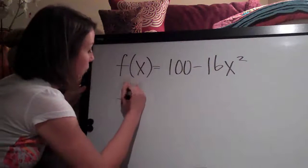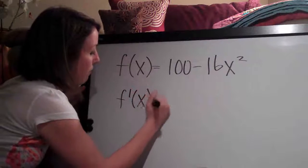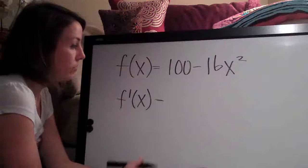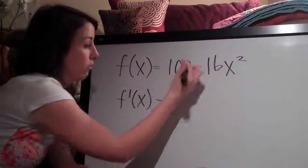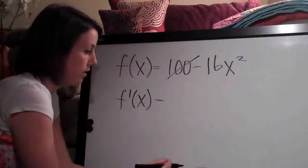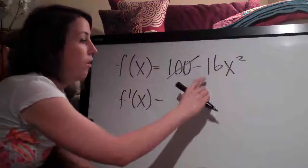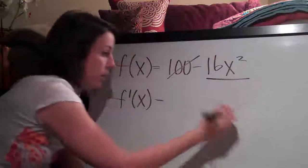So derivative notation f prime of x equals, as we learned last time, the derivative of a constant is zero so that goes away and then all we have to deal with is this 16 x squared here.